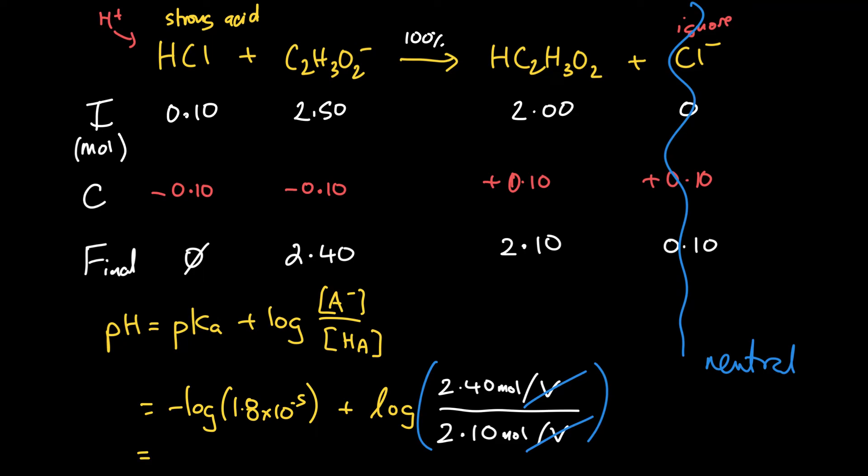So the pKa is 4.74. I'll keep an extra guard digit there, 4.744. Let's see. This ratio is bigger than 1, so the log will be bigger than 0. So it'll be a positive value. So 0.0580. So this is going to have three significant figures. And when we logarithm it, it becomes three decimal places. So because that has two decimals and that has three, the final answer can only be reported to two decimal places. So at the end of the day, we can really only say 4.80. And that was two decimal places.